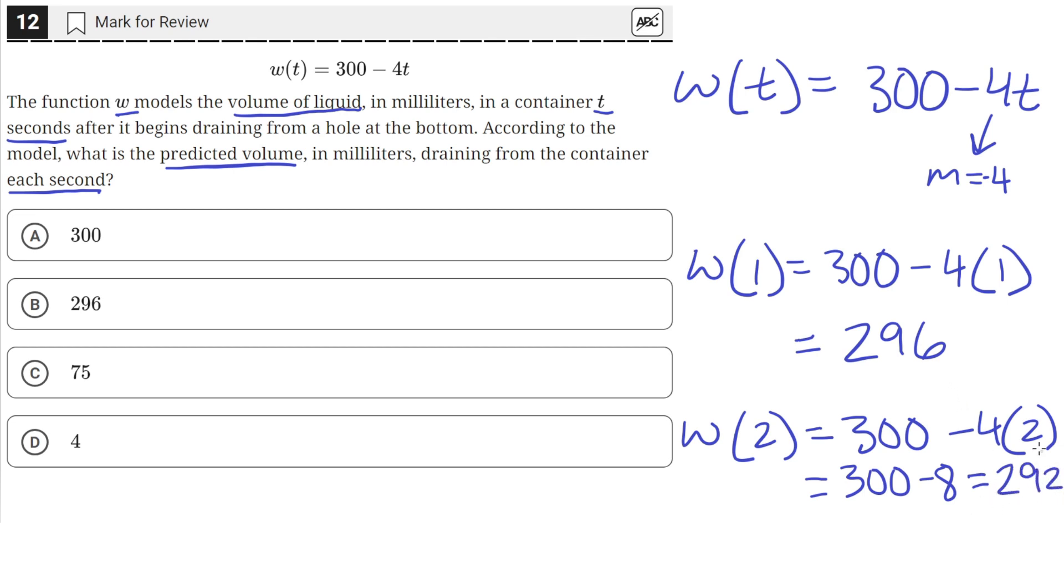So after another second has passed, the volume of liquid went down by 4 again. So for every second that passes, 4 milliliters are drained from the container.